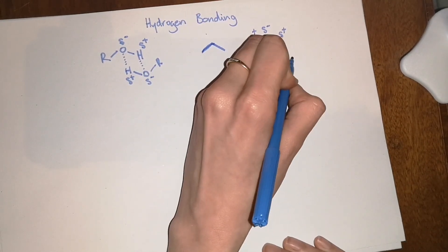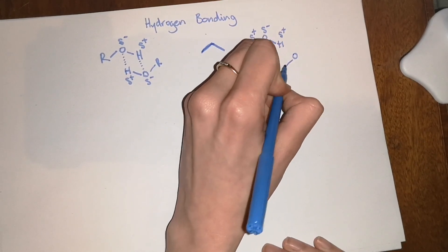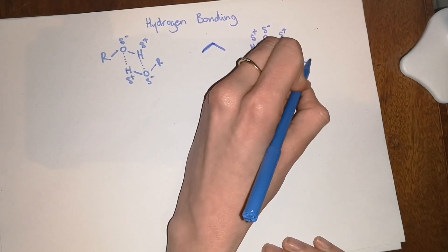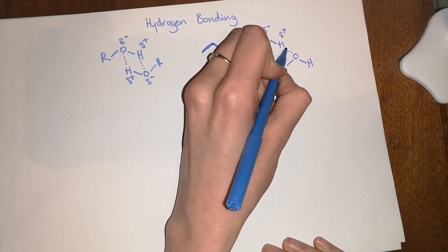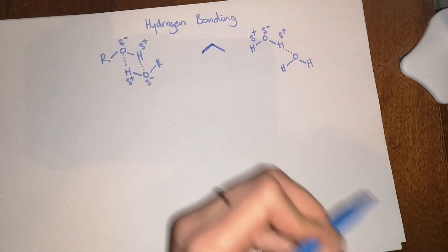So then what happens is more water molecules will come along and you'll get intermolecular bonding. You'll get that hydrogen bonding again.